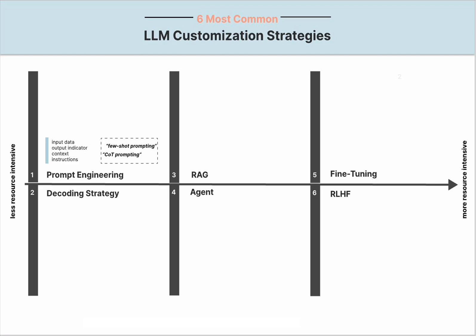Basic prompt engineering techniques include zero-shot, one-shot, and few-shot prompting. Users can implement basic prompt engineering techniques directly while interacting with the LLM, making it an efficient approach to align the model's behavior to a novel objective. API implementation is also an option — more details can be found in my previous article, 'A Simple Pipeline for Integrating LLM Prompt with Knowledge Graph,' with the link in the description.